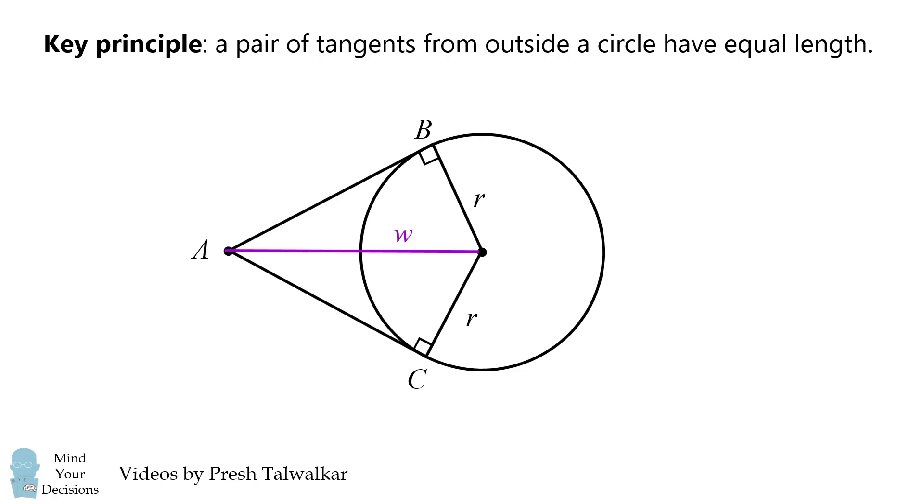Since we have right triangles, we can solve for the remaining leg. AB will be the square root of W squared minus R squared, and AC will have the same length. Therefore, AB and AC have equal length, and that's what we needed to show.